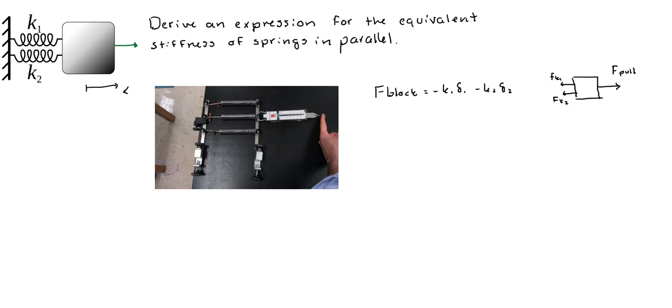Okay, but since delta1 is equal to delta2, then we can say that f minus k1 plus k2 times displacement is equal to f block.